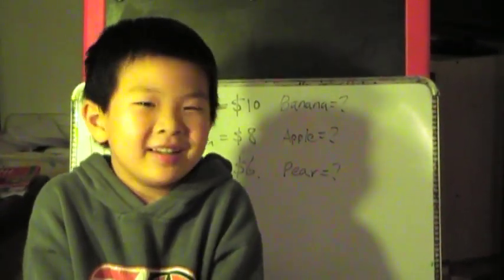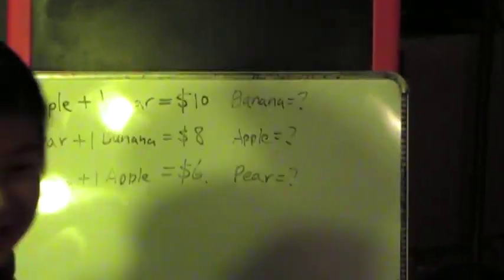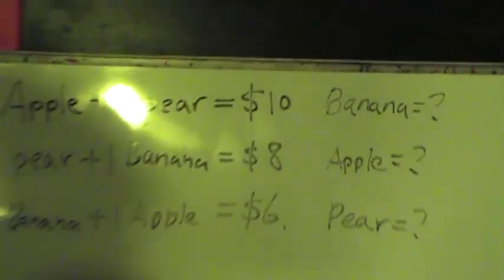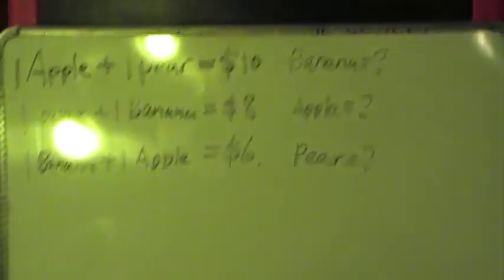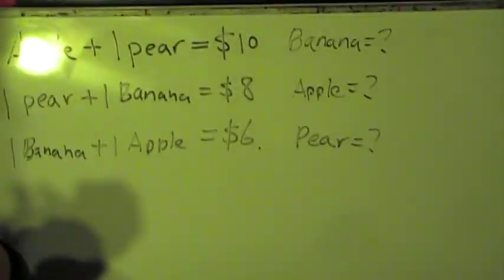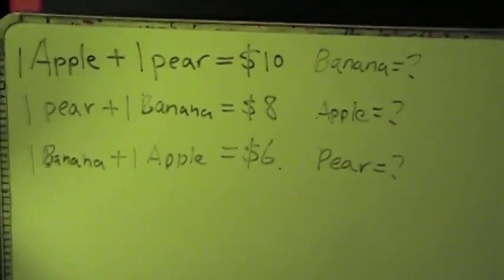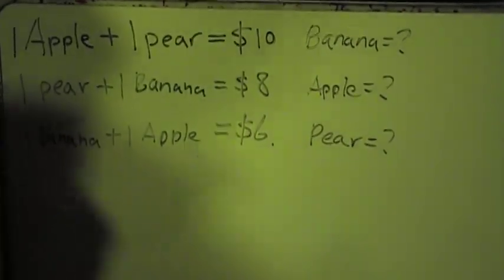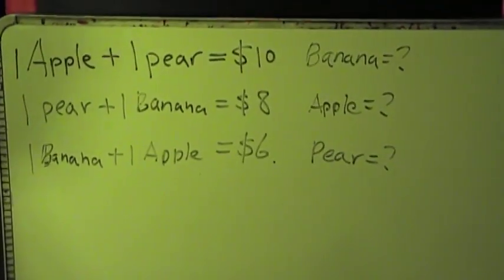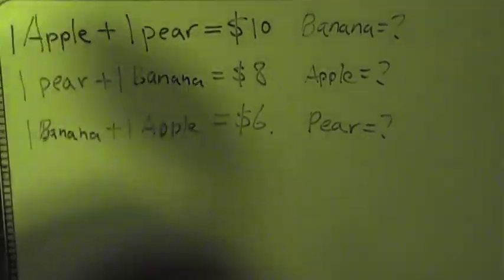Okay, I have a question for you. Okay. So look at the whiteboard. See, you got to buy an apple and a pear. Those two cost $10. See, if you buy an apple and a banana, that's $8. And a banana and an apple cost $6. So how much each banana, apple and pear cost? Can you solve it?